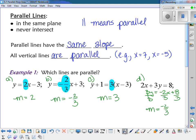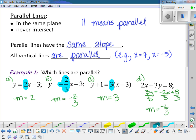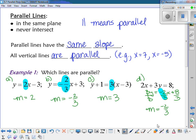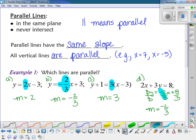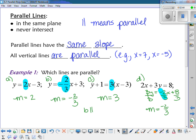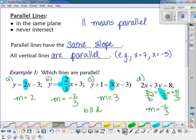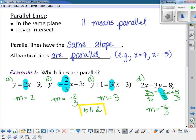We don't worry about the x when we're talking about slope. We just look at what numbers are in front of the x. Alright, so which ones are parallel? B and D. B is parallel to D. Okay, any questions on that?